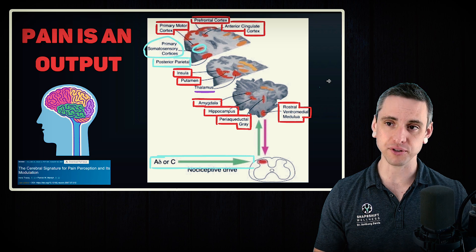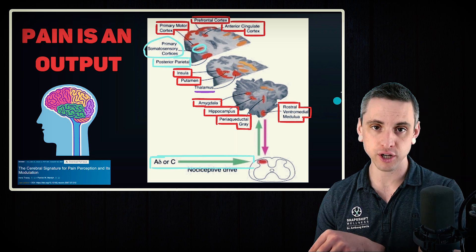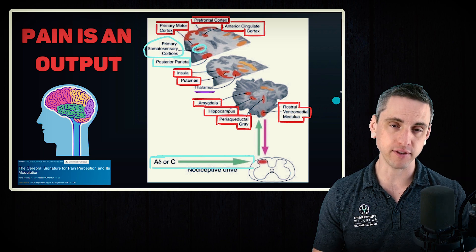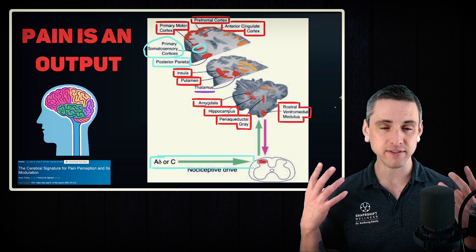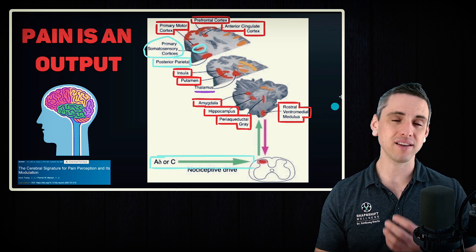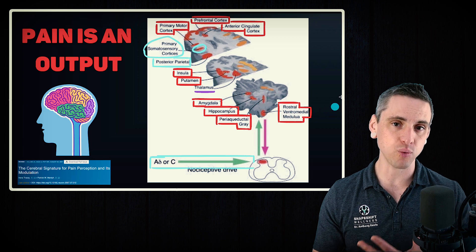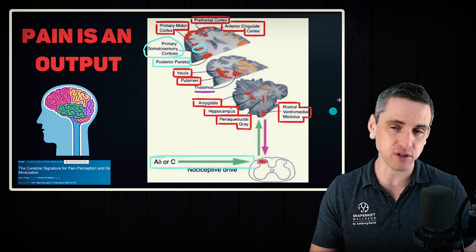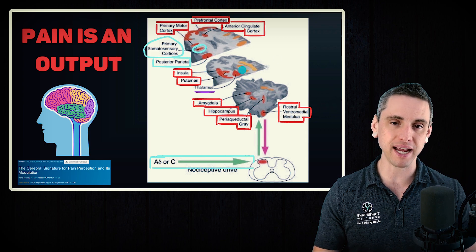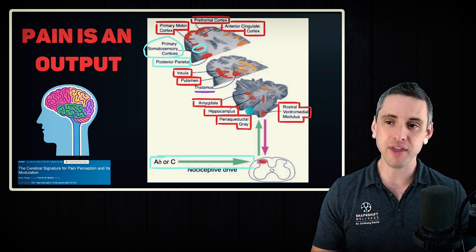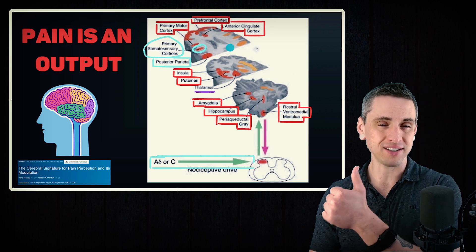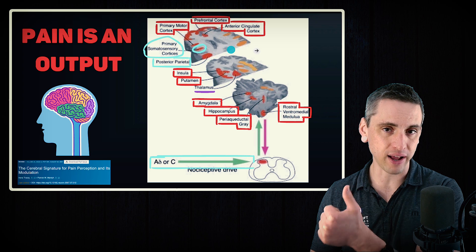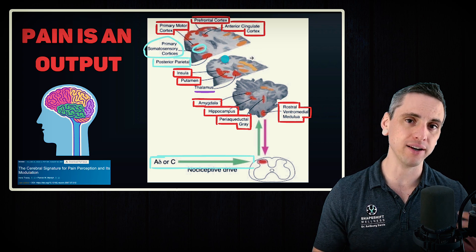Pain doesn't happen until there is an output of the brain — pain is not an input. The brain receives a lot of signals, but once the brain filters, processes, weighs, considers, and judges those signals using this pain neurosignature, it will either output yes, there is a threat and you're going to have pain, or no — no threat, no pain.